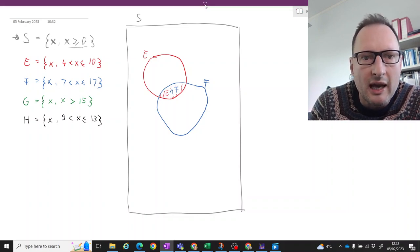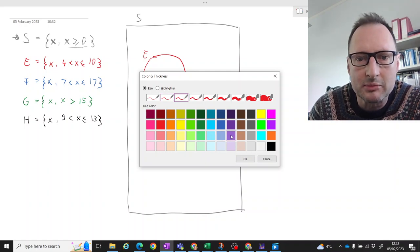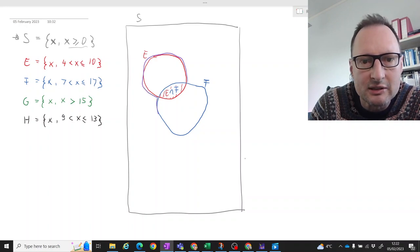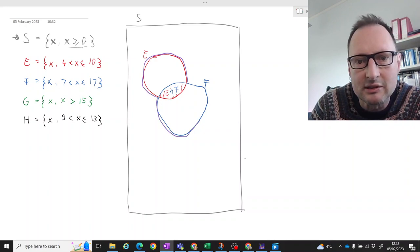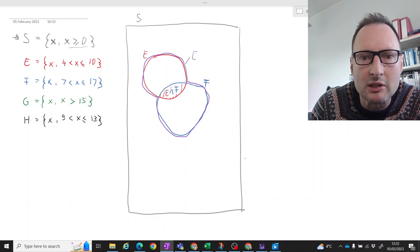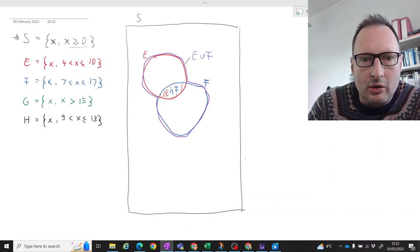Okay, then we also have, and I should perhaps just use a different color for this. Let me use purple. Okay, we also have this area here. Let's see if I can illustrate that. This area here. So basically, all the values which are either in E or in F, that is the union between E and F.